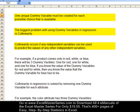For example, if a product comes only in red, white, and blue, there would be three color dummy variables: one for red, one for white, and one for blue. If you knew the value of the dummy variables for red and for white, then you'd know the value of the dummy variable for blue.